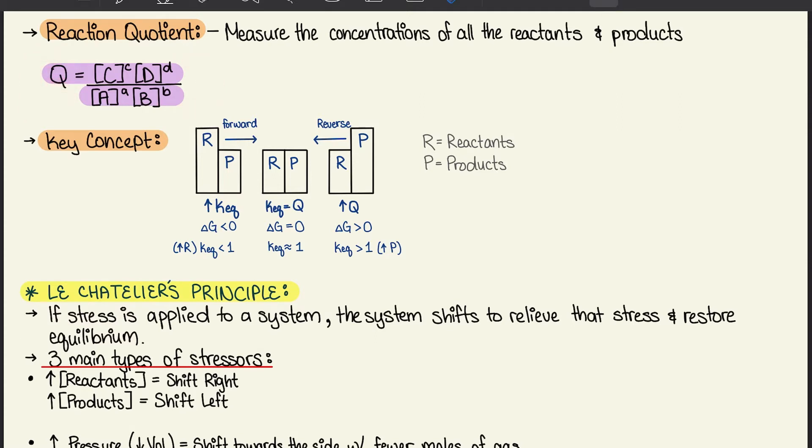And for the key concepts, I drew this simple diagram to kind of simplify all the information that we had. So the R represents reactants, and P represents the products. So when R is higher than P, we have higher KEQ and a negative delta G value. That means it's spontaneous.